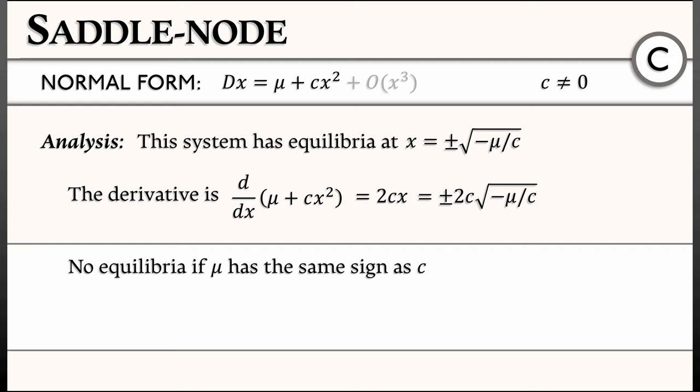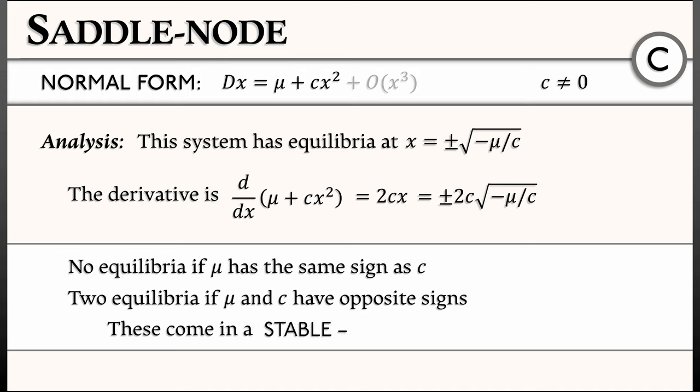then there is precisely one equilibrium at x equals 0. If we keep going and change mu so that it has the opposite sign to c, then we get a pair of equilibria.